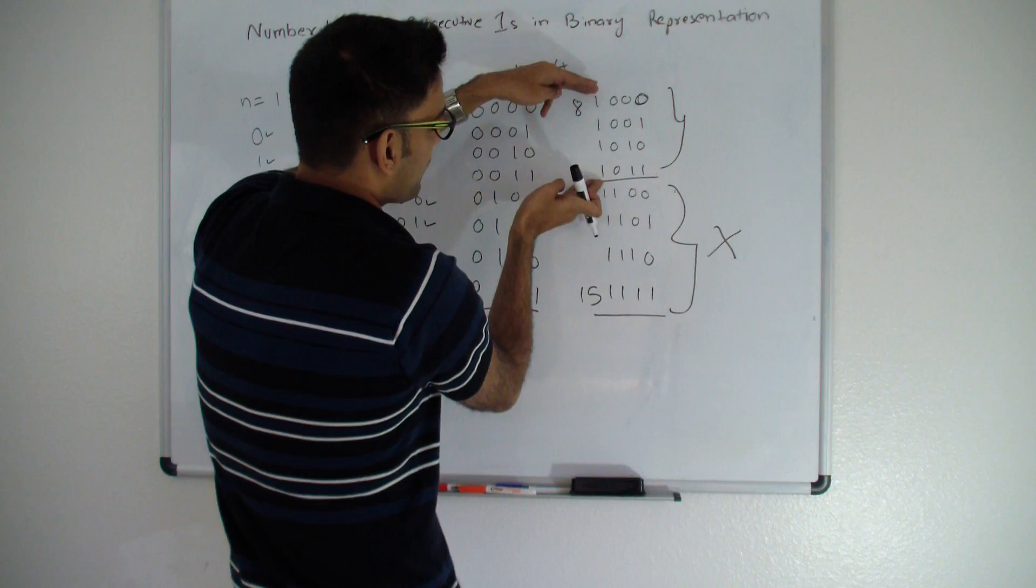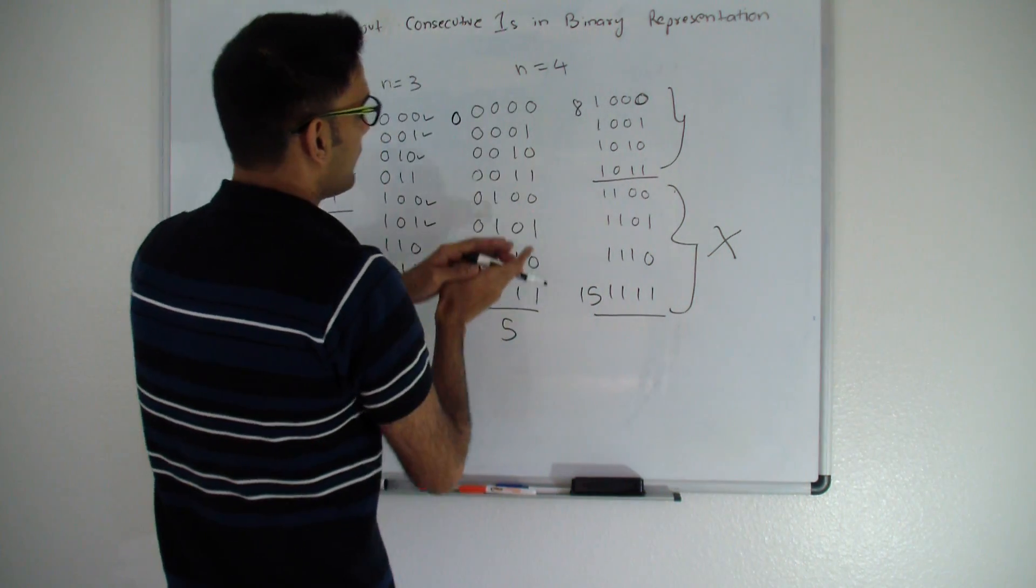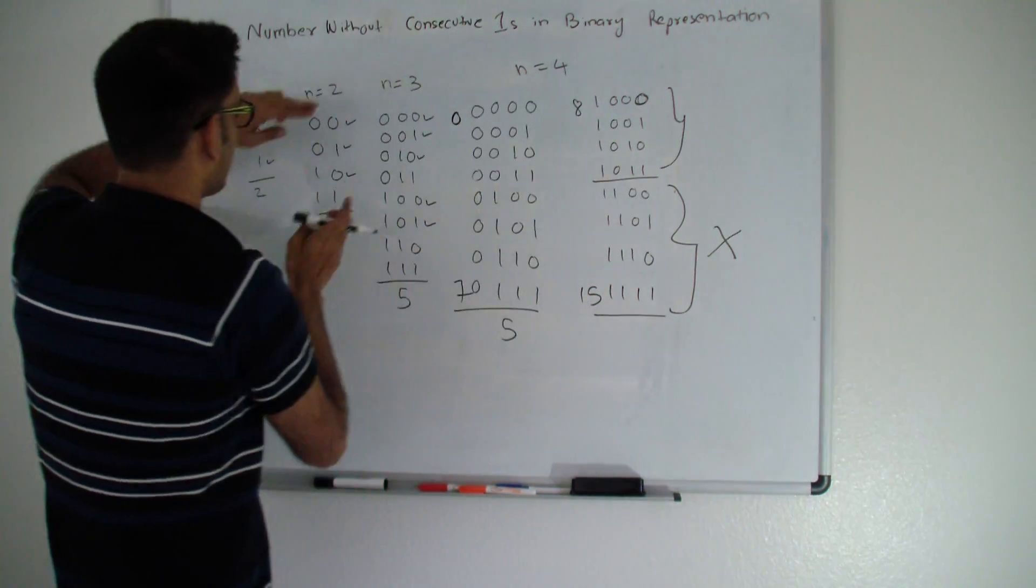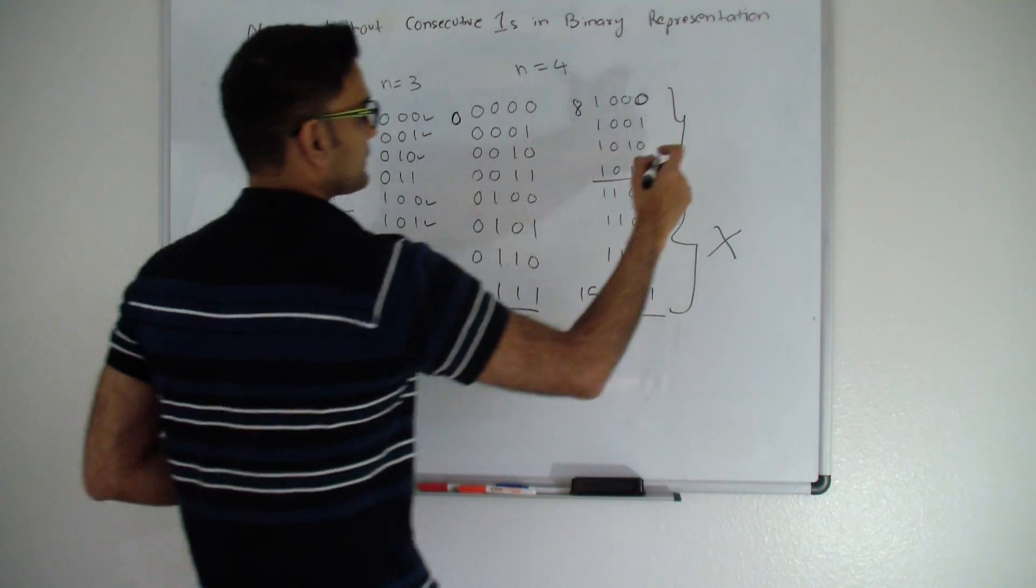Here, see how we have 4 numbers left, and we have already calculated what is the number when we have 4 numbers left, which is for 2. So this number here is 2.